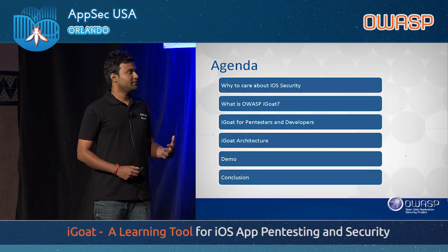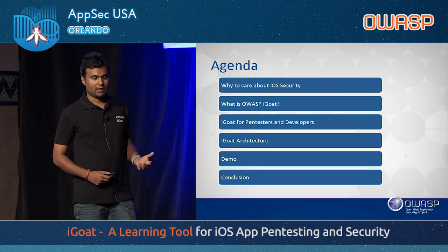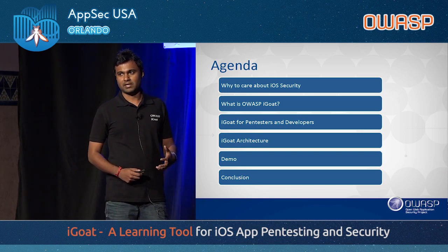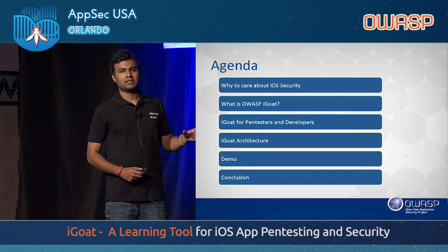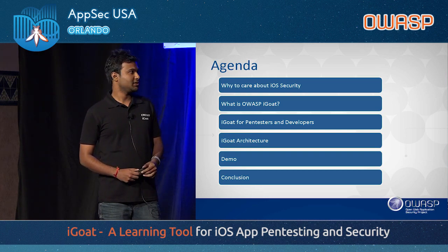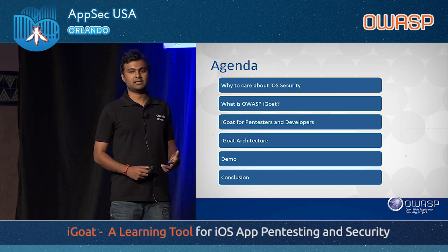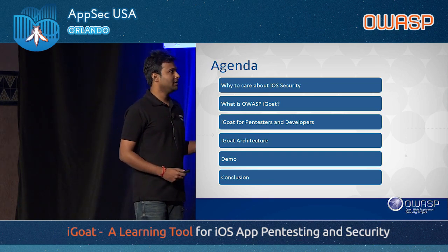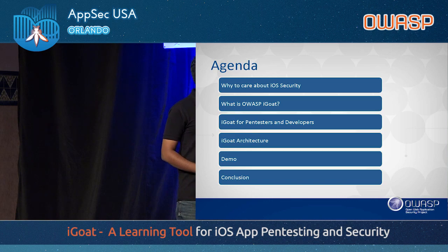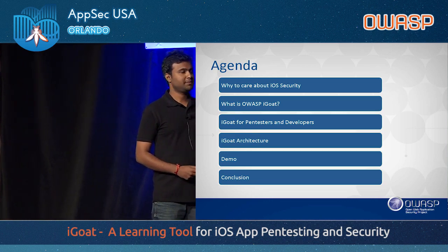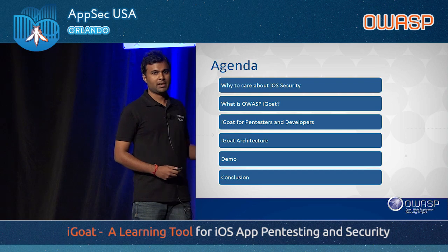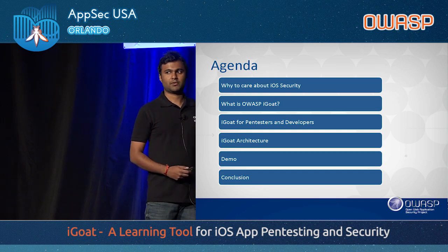Today's agenda: we'll talk about iOS security, what the OWASP iGOT project is, how it can help developers and pen testers solve security issues in iOS applications, how we can have a secure SDLC in iOS development, and I will demonstrate how it helps both pen testers and developers — the architecture, how to make use of it, and all project details.